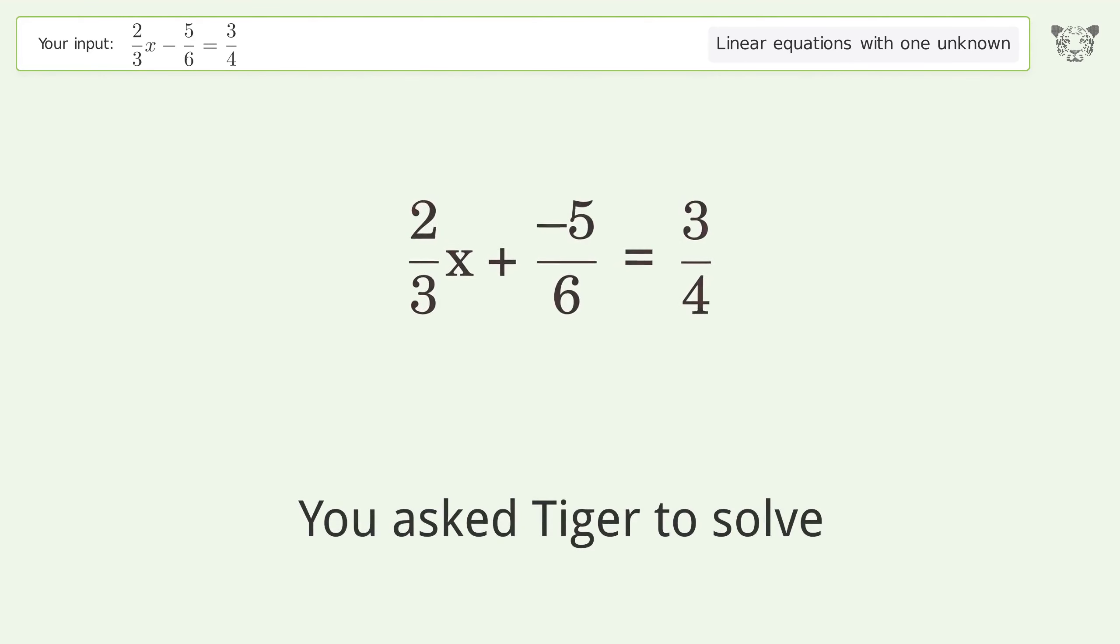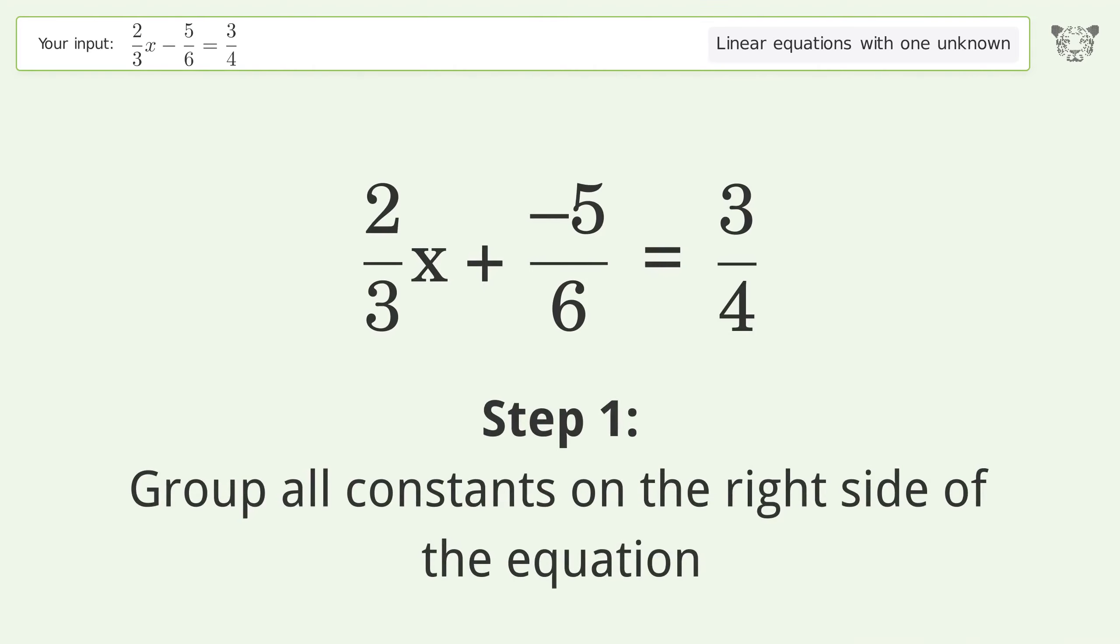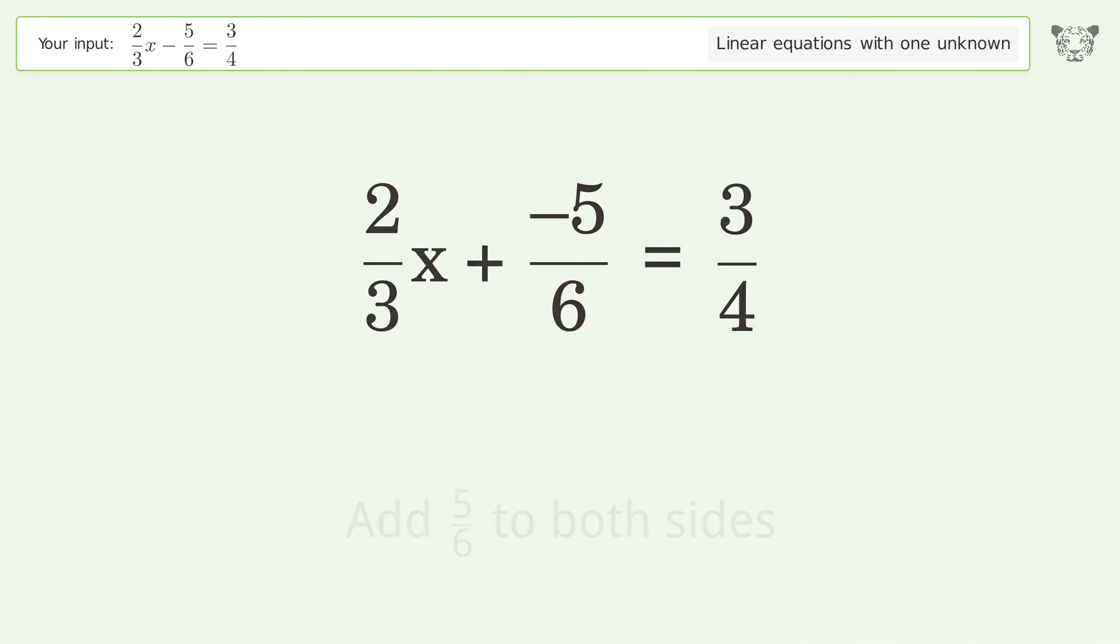You ask Tiger to solve this. This deals with linear equations with one unknown. The final result is x equals 19 over 8. Let's solve it step by step. Group all constants on the right side of the equation. Add 5 over 6 to both sides.